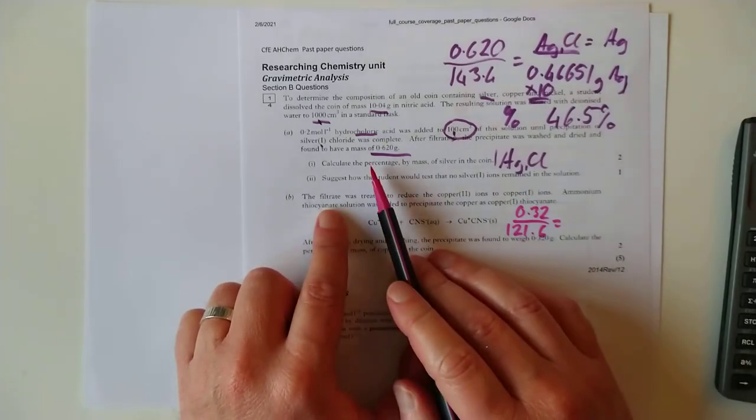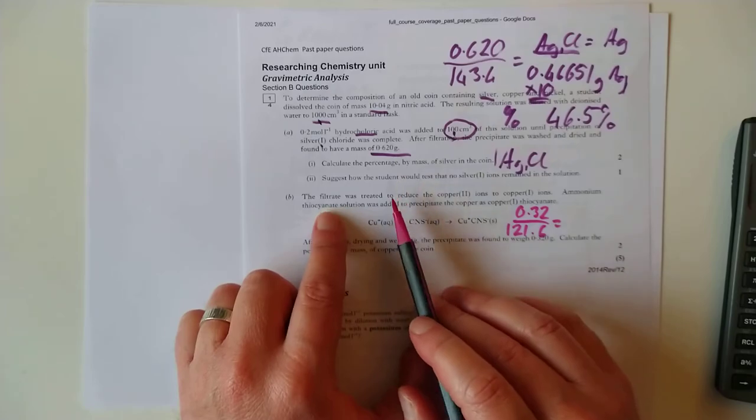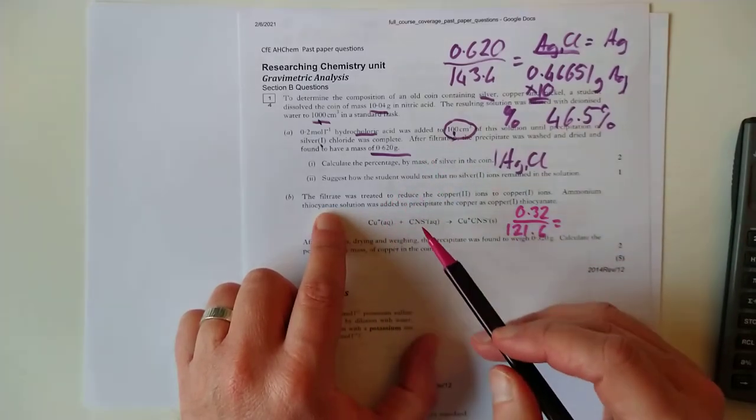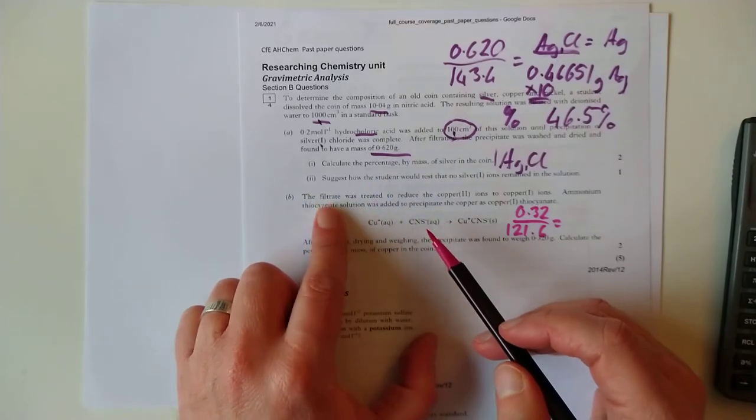Filtrate. Oh, the filtrate that follows on from this. So that is still 100 mils compared to 1000. So I'm going to have to take that and multiply it by 10.